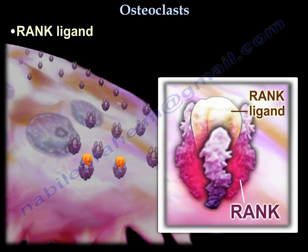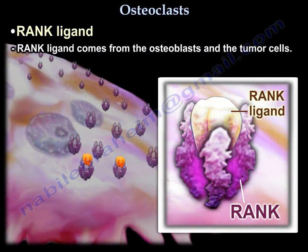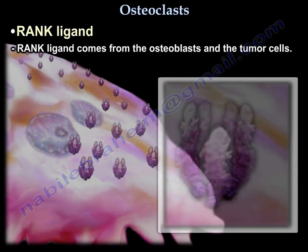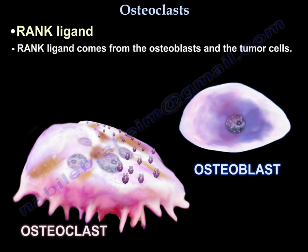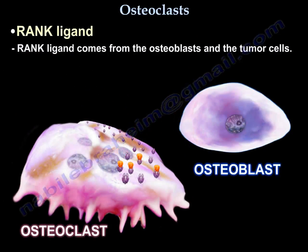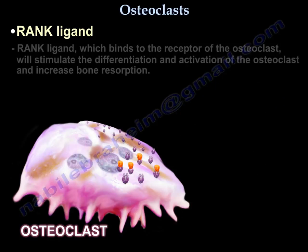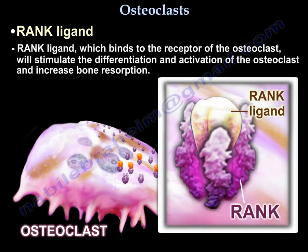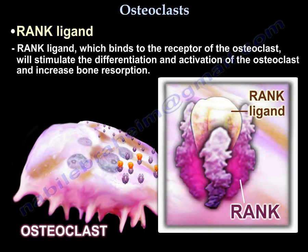The RANK ligand can be obtained from osteoblasts and from tumor cells. This RANK ligand, which binds to the receptor on the osteoclast, stimulates the differentiation and activation of the osteoclast and increases bone resorption.